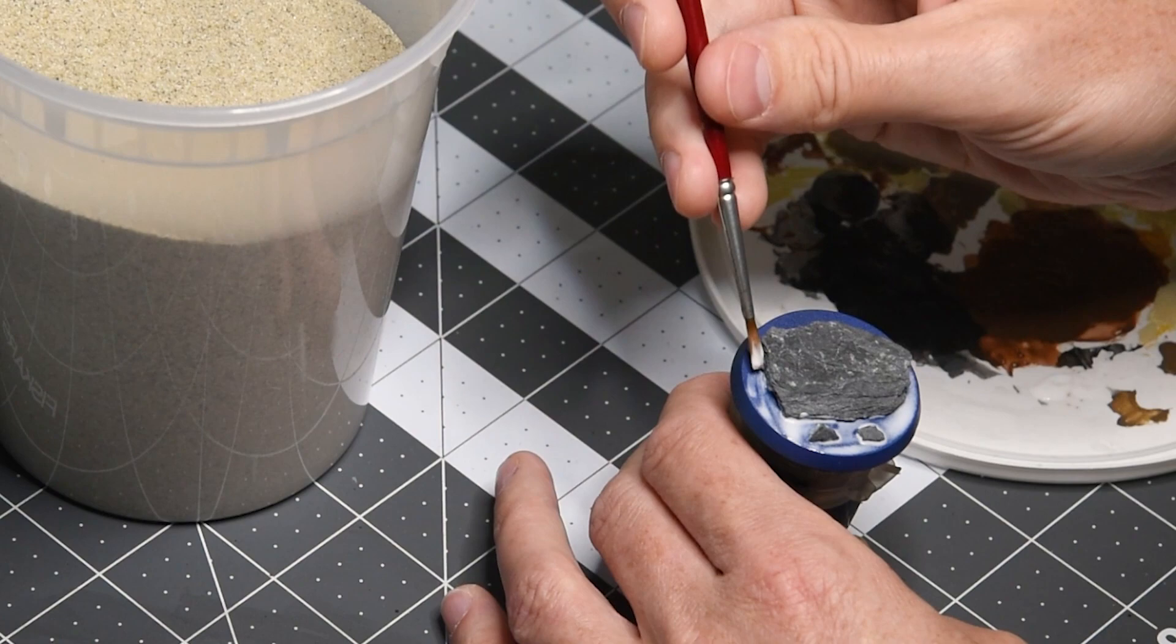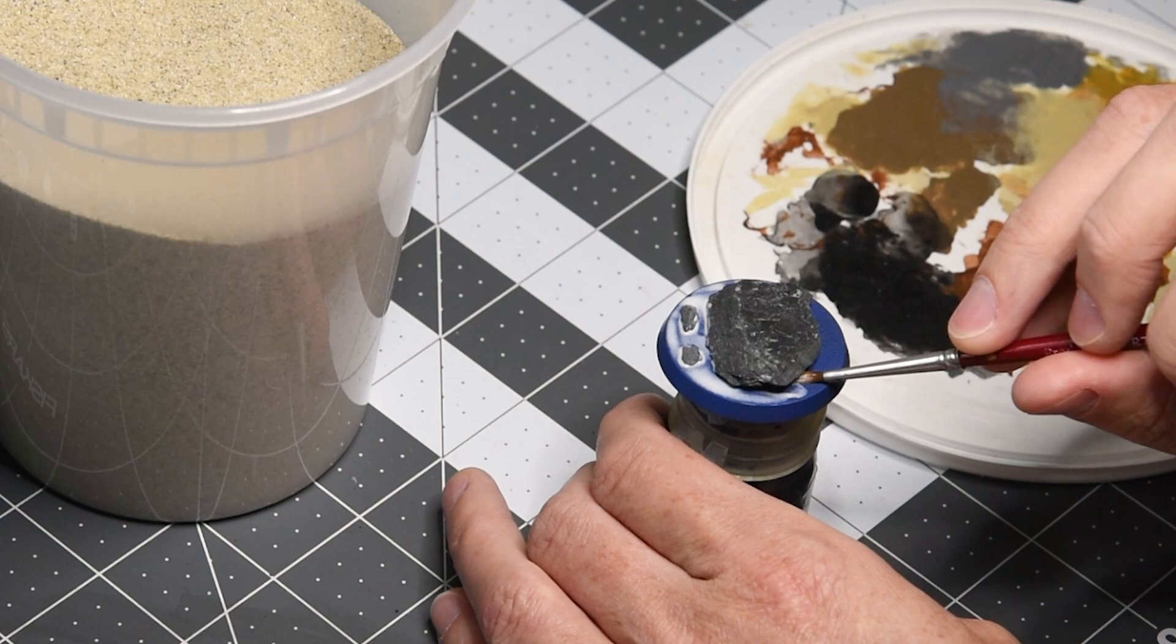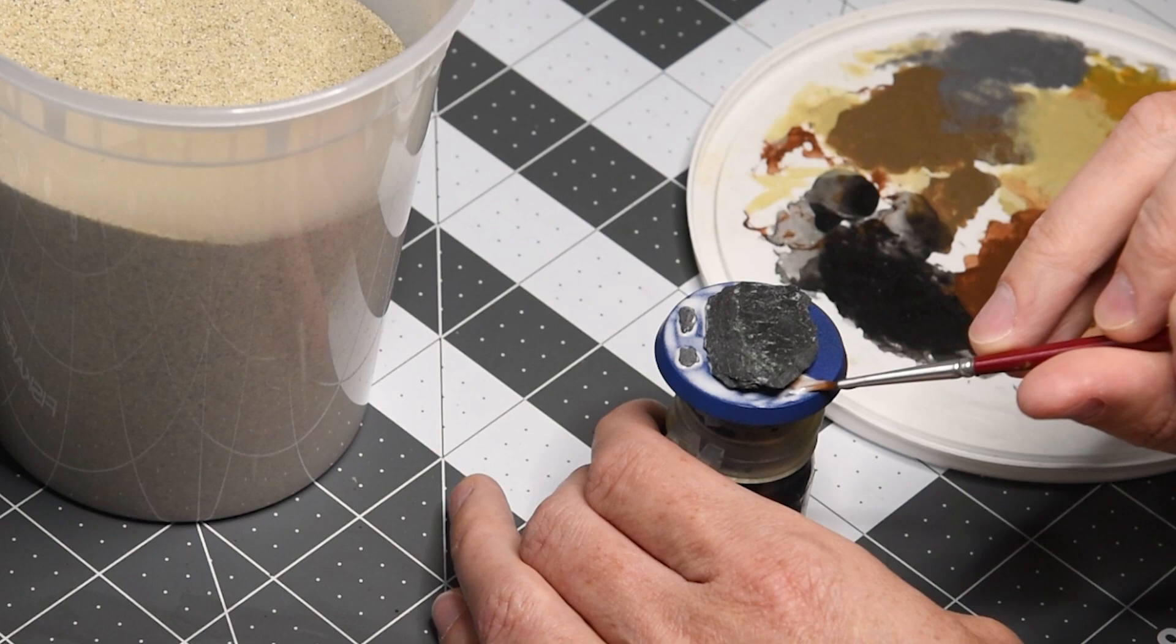And we're going to actually be painting this. I'm using PVA glue here for the sand. But the slate I glue down with super glue and the same super glue you saw at the beginning of the video.